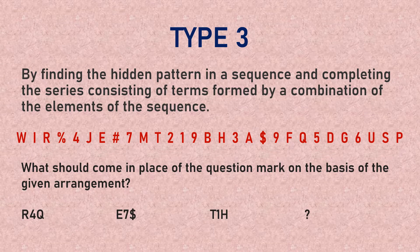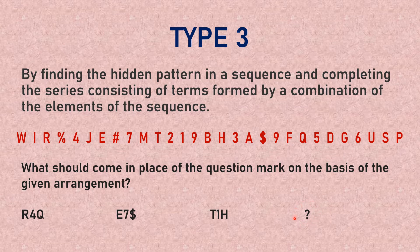For Type 3 questions, you have to find the hidden pattern in a sequence and complete the series by forming a combination of elements. You observe what pattern is present and then determine what combination should be placed instead of the question mark.